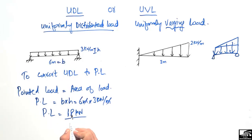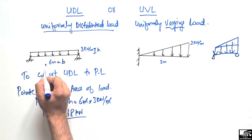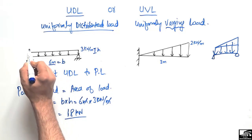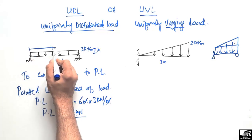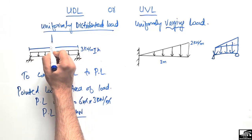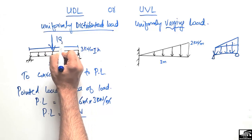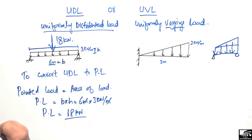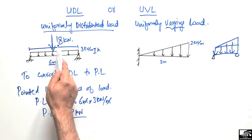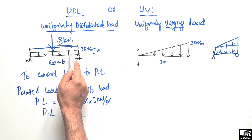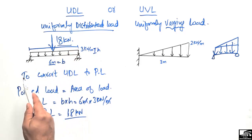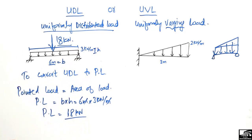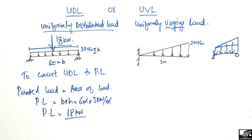This 18 kN pointed load acts at the center of the beam. Since the total beam length is 6 meters, it will act 3 meters from each support — at the center of the beam. We convert the uniformly distributed load into a pointed or concentrated load so that we can later find the support reactions.